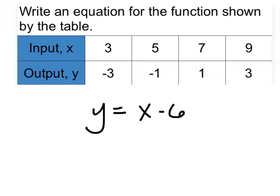Of course, once I have it written, I want to test it with those other inputs and outputs that I haven't checked yet. So 3 minus 6 will give me negative 3, and 5 minus 6 will give me negative 1. So that will work.